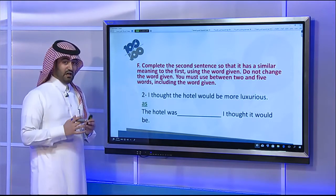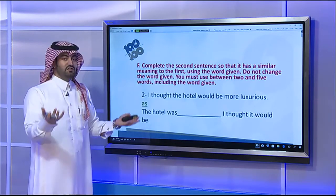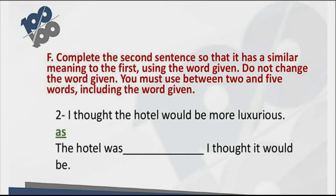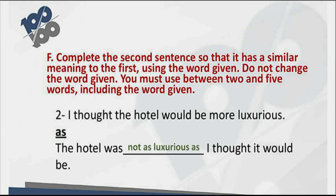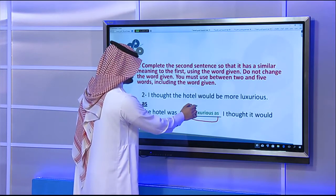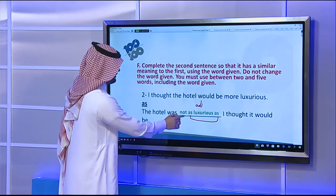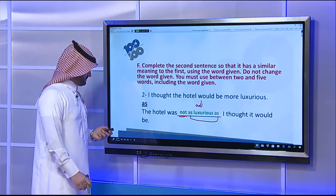Sentence two: 'I thought the hotel would be more luxurious.' Given word: as. I expected it to be more luxurious but it wasn't. To show the difference using 'as...as', I use 'not as adjective as': 'The hotel was not as luxurious as I thought it would be.' Not as... as shows the difference from the expectation.